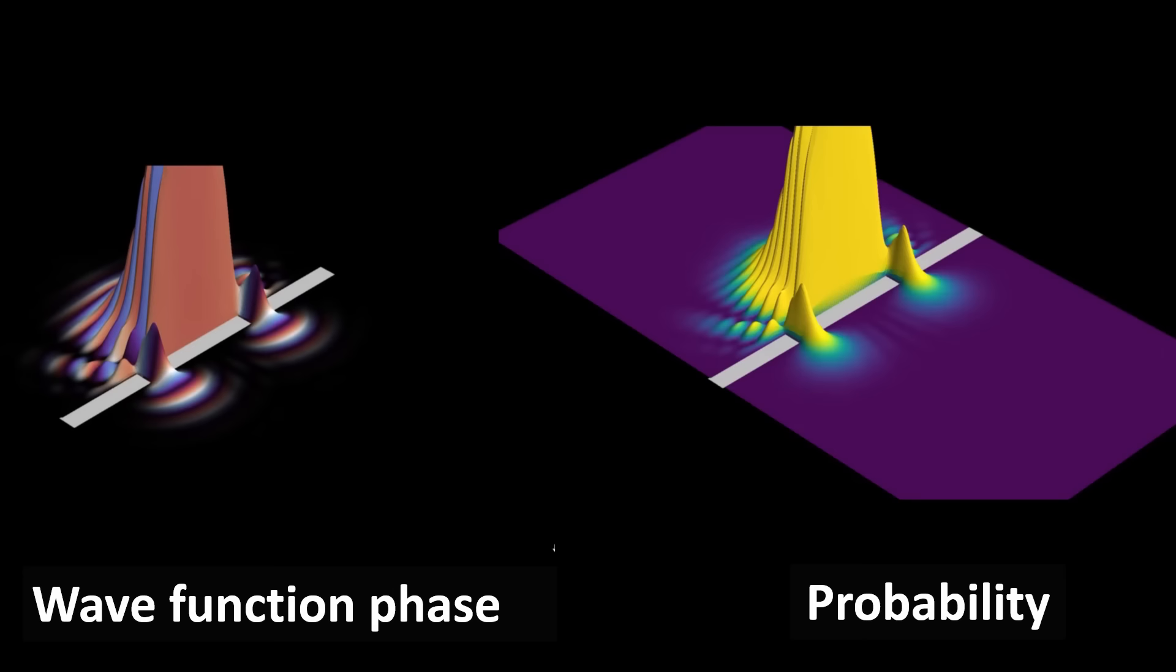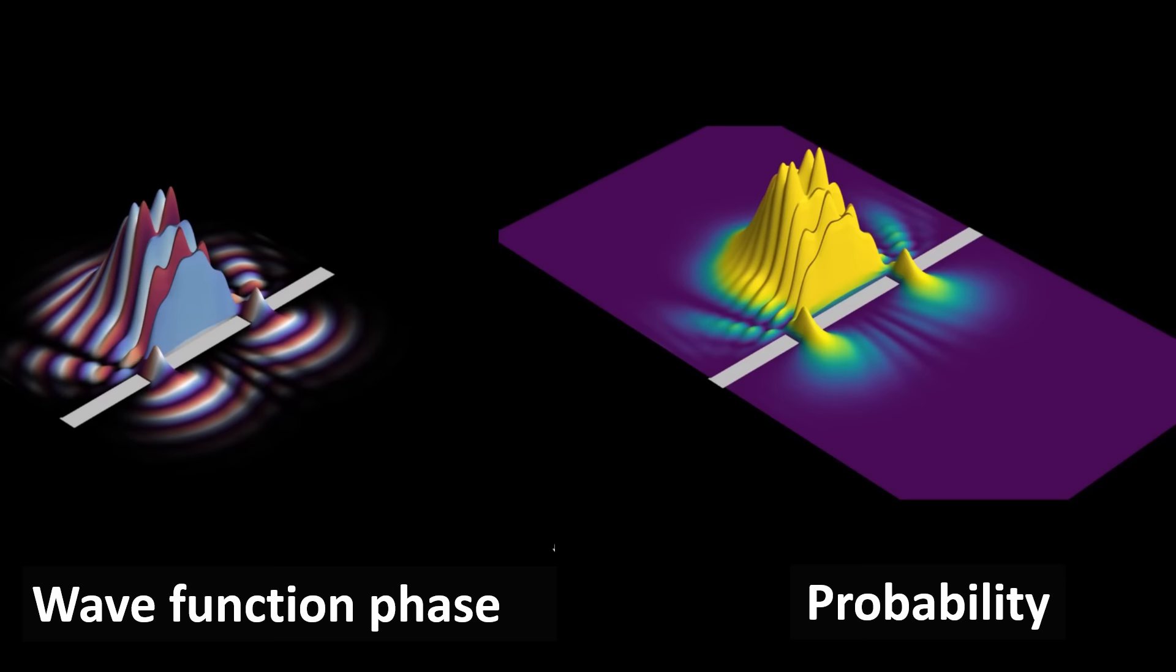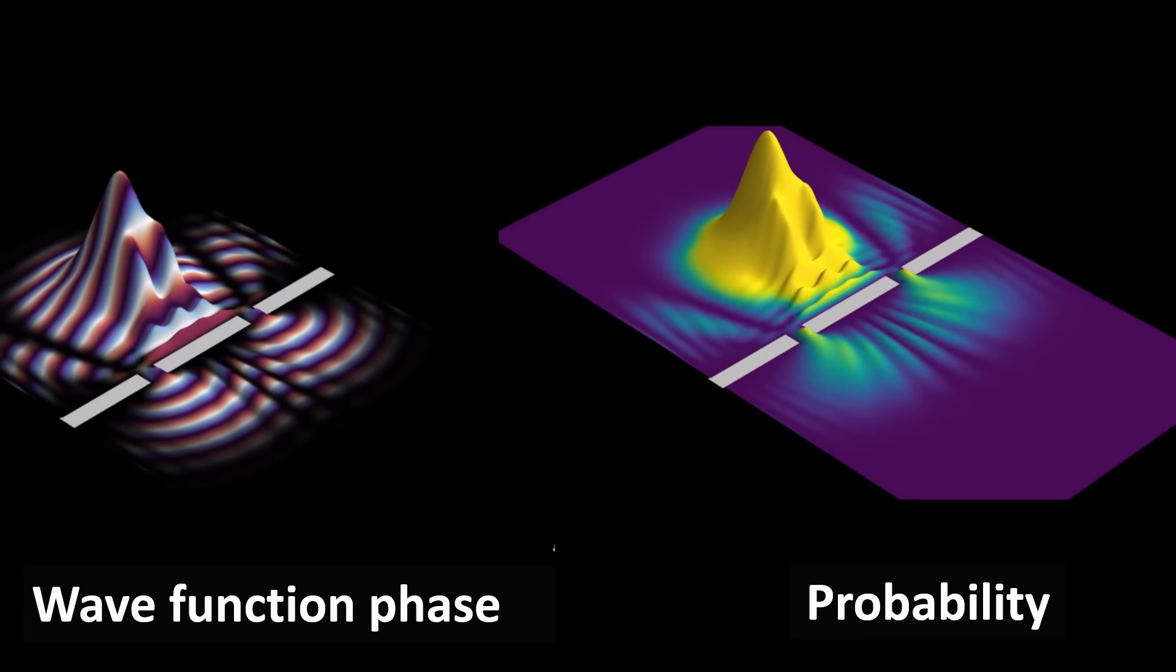Now watch what happens to the wave function and probability while it develops in space and time. And especially interesting is what happens when it elastically collides with an obstruction. In this case, it is presented a barrier with two openings, so basically the double slit experiment.